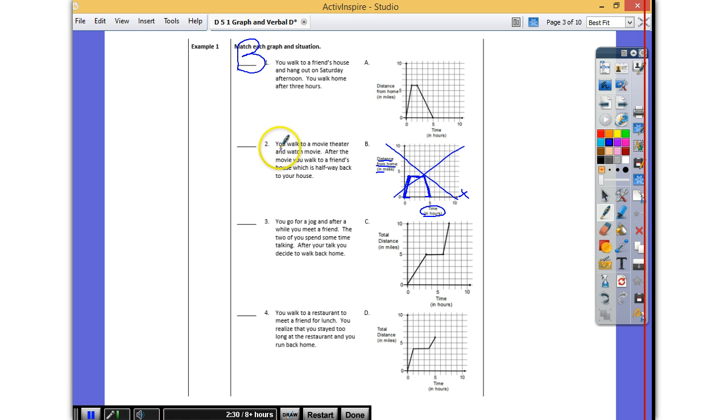How about which one depicts number two? You walk to a movie theater and watch a movie. After the movie, you walk to a friend's house, which is halfway back to your house. Who thinks it's A? C? D. You are correct. It is D.